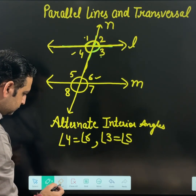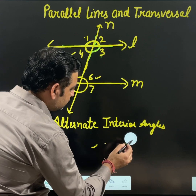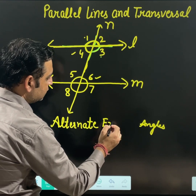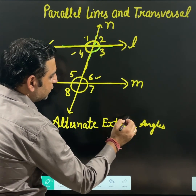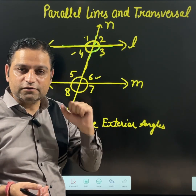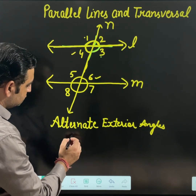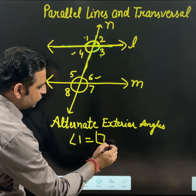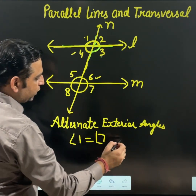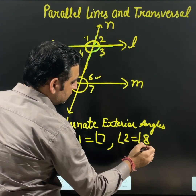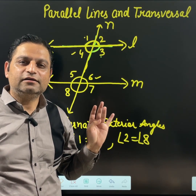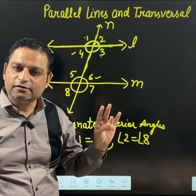Other than alternate interior, there is also alternate exterior angles. The same rule applies, but now we deal with exterior angles only — interior angles are not in the picture. So angle 1 is equal to angle 7 — one from the left, one from the right, both exterior. And angle 2 is equal to angle 8. These form alternate exterior angles.